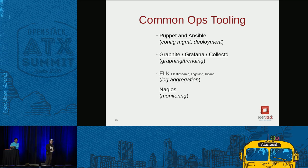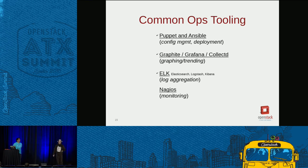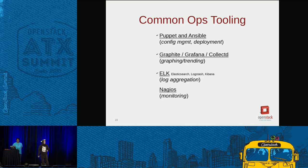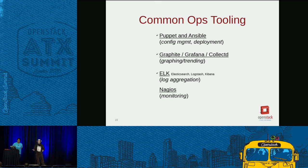Some of the tooling we use to manage the environment and make our lives easier: first and foremost we want config management, so we use Puppet and Ansible — a mix of both. Not one configuration management tool solves every problem, so we pick and choose the best from both worlds. Graphite, Grafana, and CollectD serve to visualize usage patterns, show problems, and show trending. Managers love graphs and colors.